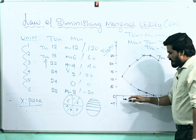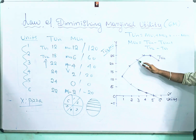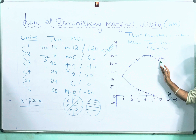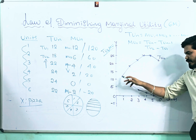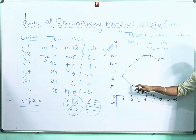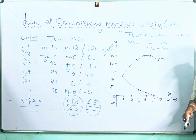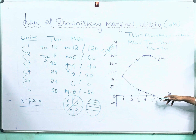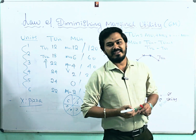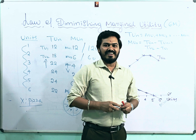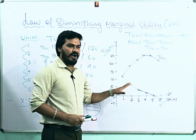For the total utility curve: the first unit provides 12, next 18, then 22, 24, 24, and then 22. Connecting all these points gives the total utility curve. For the marginal utility curve: the values are 12, 6, 4, 2, 0, and −2. Connecting these points gives the marginal utility curve. The NCERT explanation of the diagram is not very easy to understand, so I will explain it in a simpler way using three key relations between total utility and marginal utility.